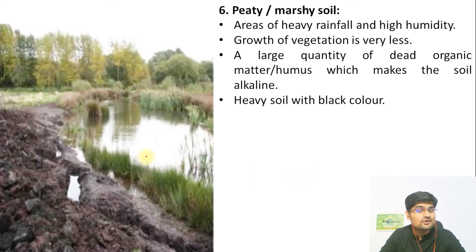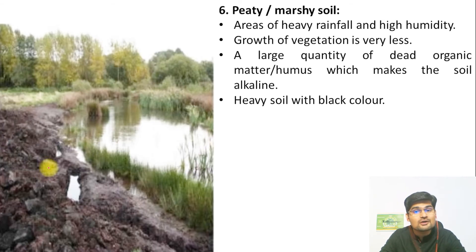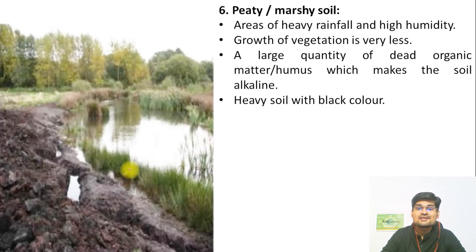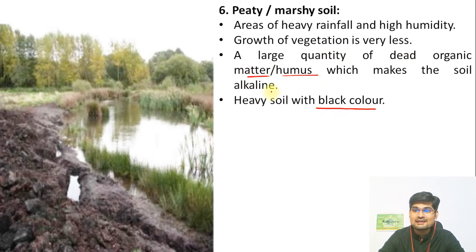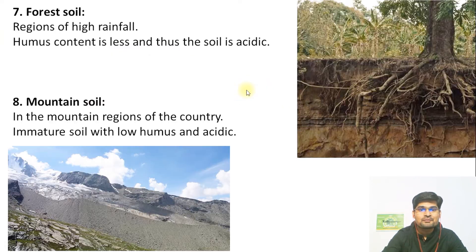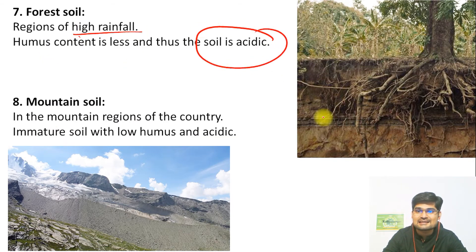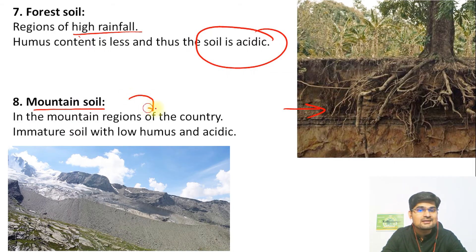Then we have peaty or marshy soil, where anaerobic conditions exist because the soil is completely waterlogged. These are heavy soils with black color containing a large quantity of dead organic matter and humus, and are alkaline in nature. Then comes forest soil — found in high-rainfall regions — which is highly acidic. There is also mountain soil, especially in the Himalayan region, which is one of the most immature soils with less horizon development, low humus, and acidic conditions.